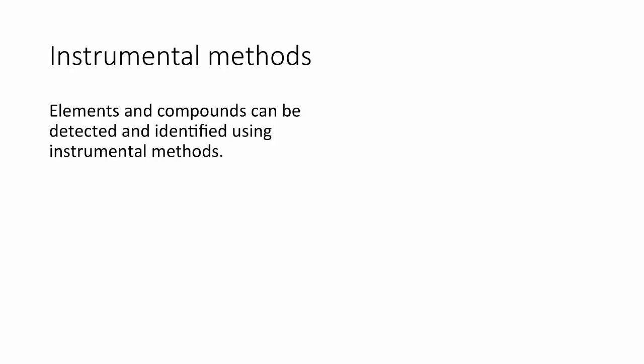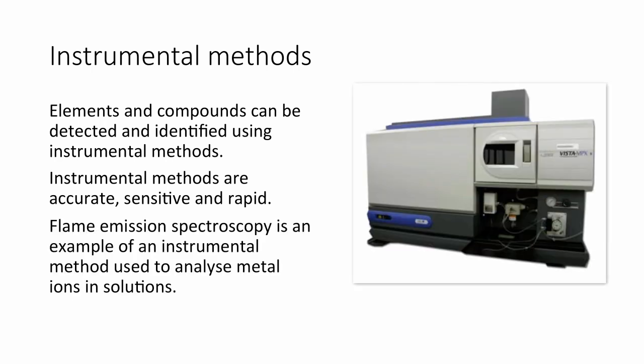Instrumental methods. Elements and compounds can be detected and identified using instrumental methods. Instrumental methods are accurate, sensitive and rapid. Flame emission spectroscopy is an example of an instrumental method used to analyse metal ions in solution. This instrument will provide a more accurate, a more sensitive and a quicker test than what you carried out in required practical 7.